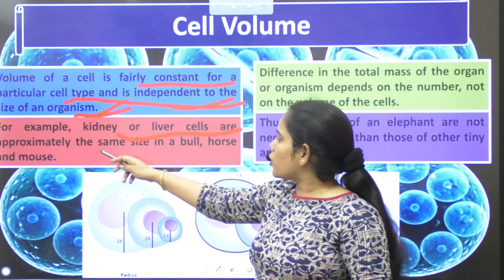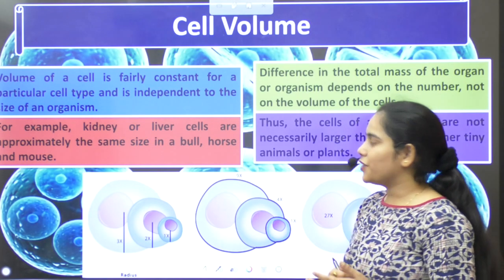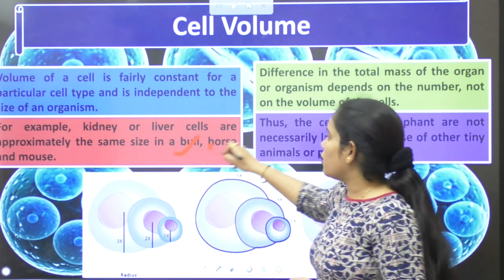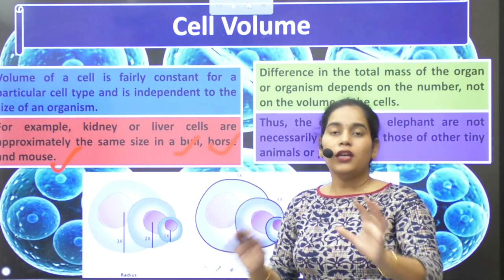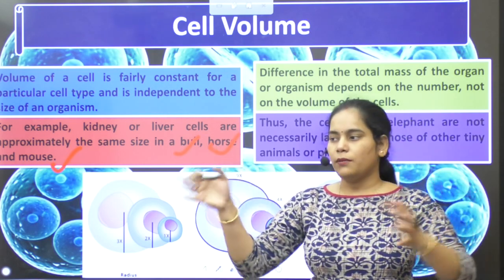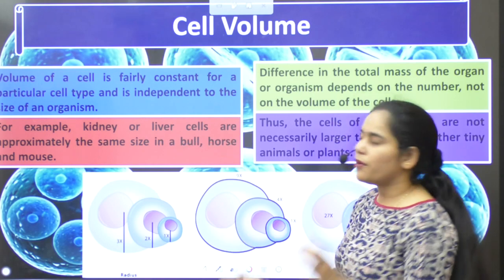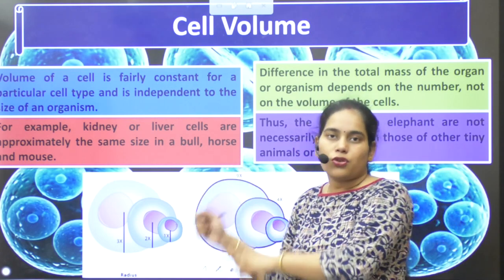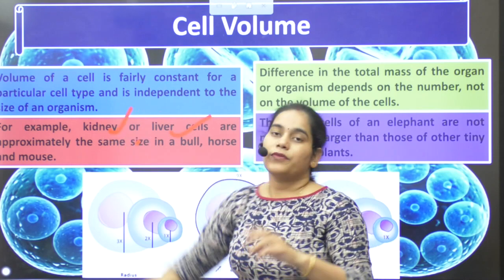For example, kidney and liver cells are approximately the same size in a bull, a horse, and a mouse. All three — bull, horse, and mouse — have the same cell volume. You have seen how big the bull is and how small the mouse is, yet the kidney cells and liver cells are all the same size.